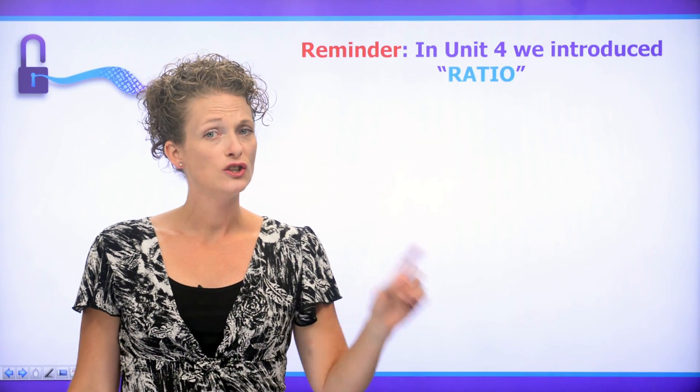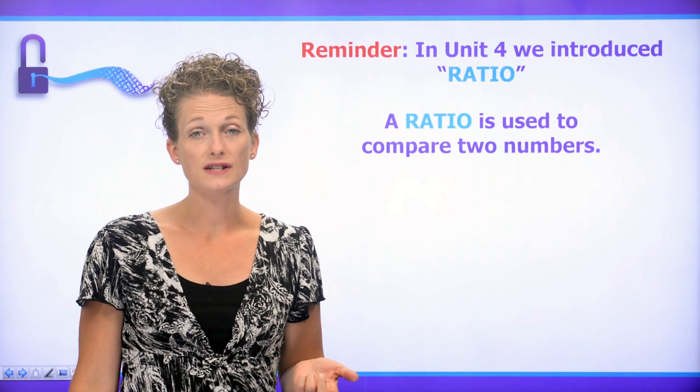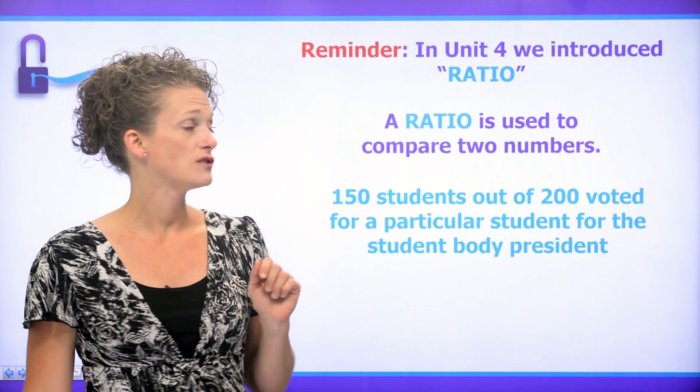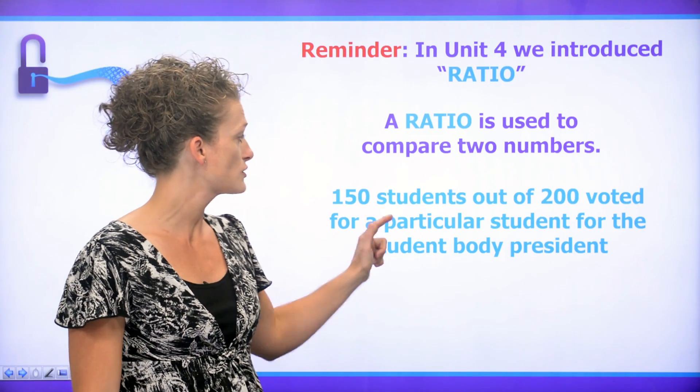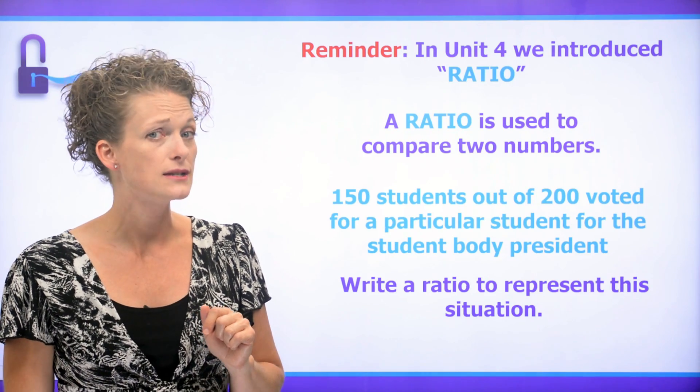Now, as a reminder, in unit four, we introduced ratio, and a ratio is a comparison of two numbers. For instance, 150 students out of 200 voted for a particular student for student body president. Write a ratio to represent this situation.